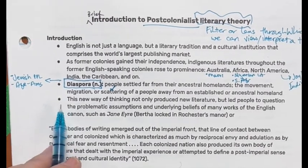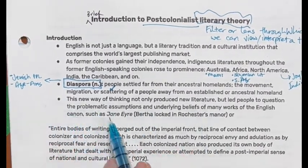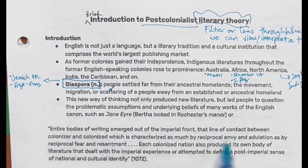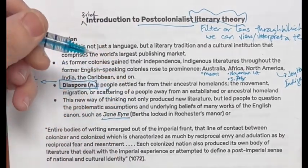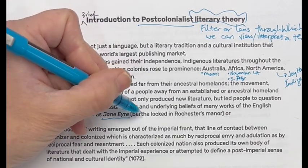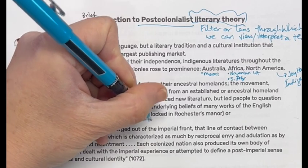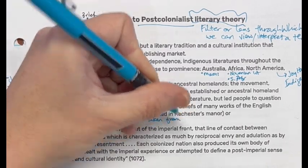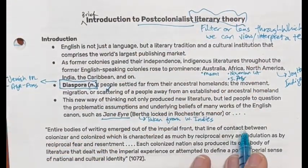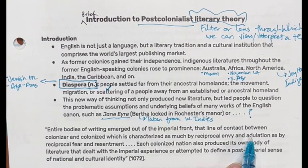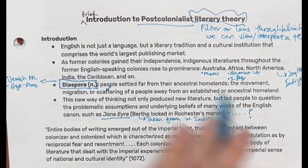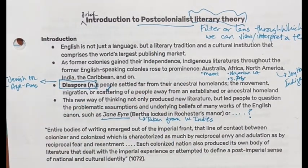This new way of thinking not only produced new literature but led people to question the problematic assumptions and underlying beliefs of many works of the so-called unofficial English canon — such as Jane Eyre, which we just read last month. Bertha, who was from the West Indies, taken from the Caribbean, is one example. I don't want to center white cultural production in a discussion of post-colonial literary theory.